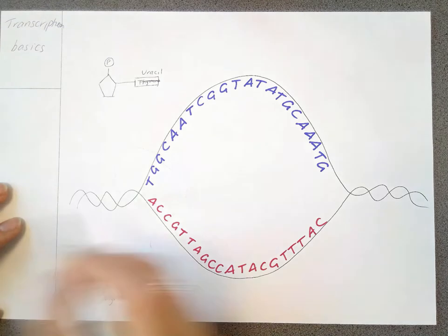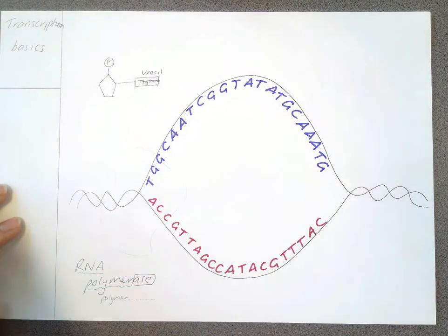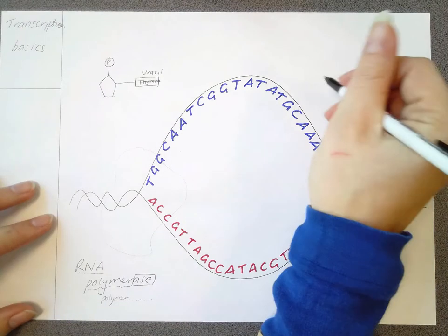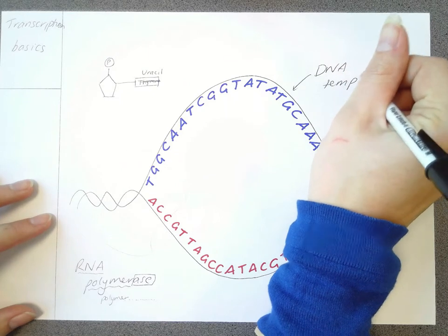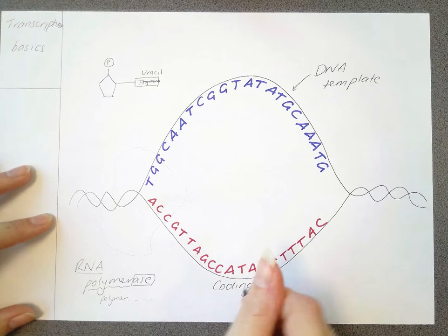So what the RNA polymerase does is it grabs those out of thin air and starts to build them up around the strand of DNA that we are transcribing. So this is known as the DNA template strand because it is the template from which we are copying. This one is called the coding strand.